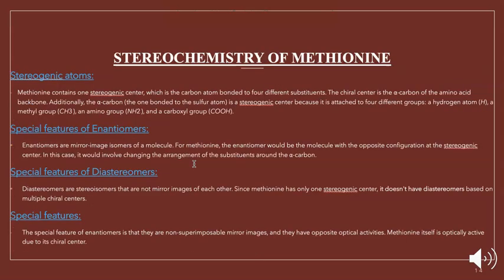For our stereochemistry of methionine we have stereogenic atoms. Methionine contains a stereogenic center which is the carbon atom bonded to four different substituents, the carbon center of the alpha carbon of the amino backbone. Additionally, the alpha carbon, the one bonded to the sulfur atom, is a stereogenic center because it is attached to four different groups: a hydrogen, a methyl, an amino, and a carboxyl.